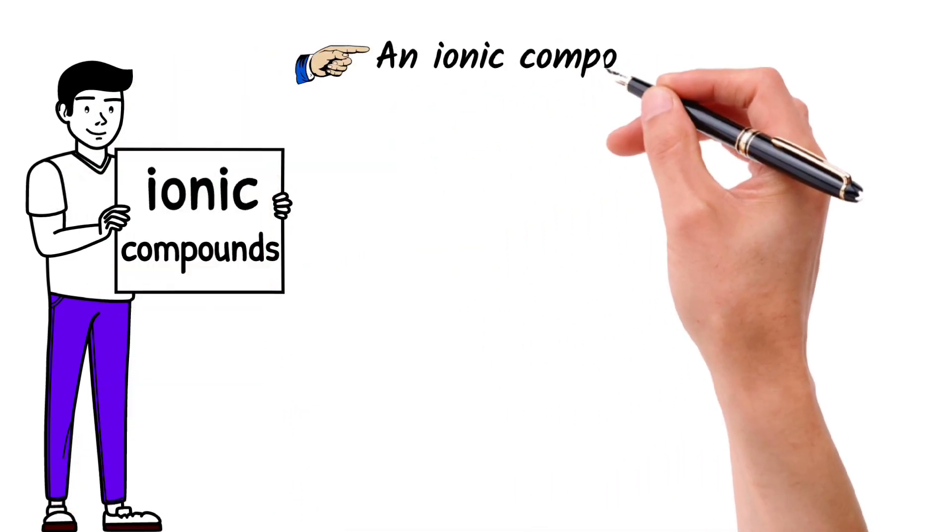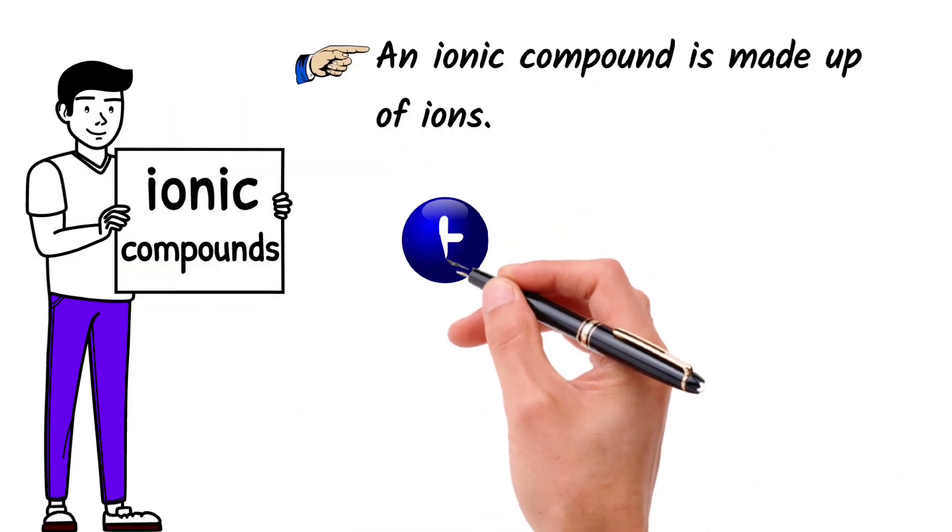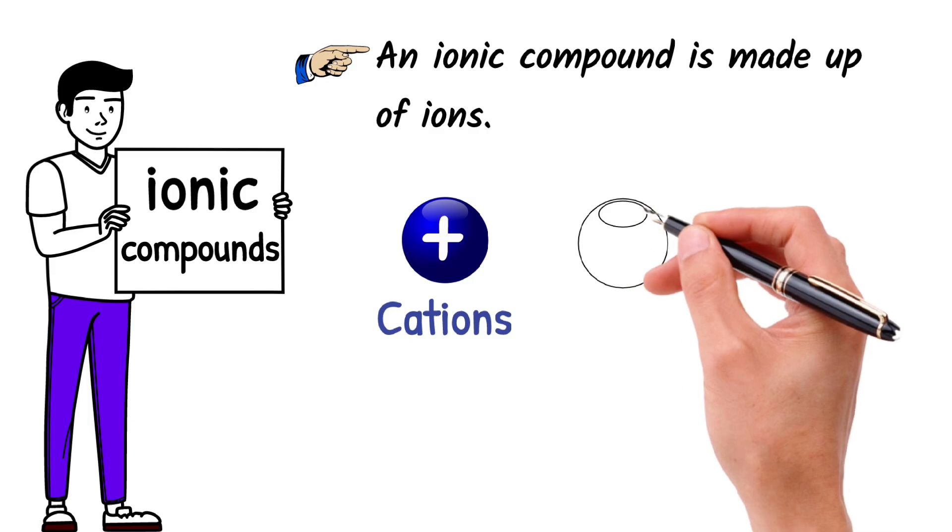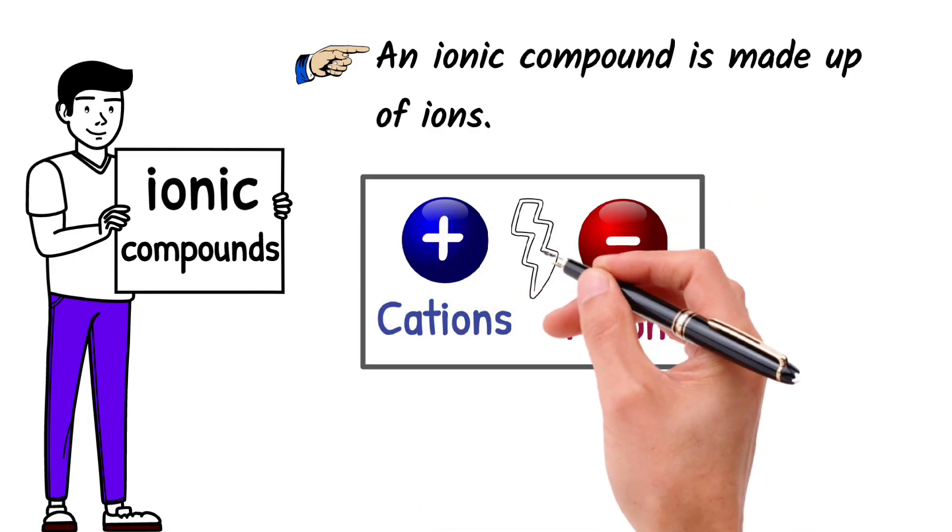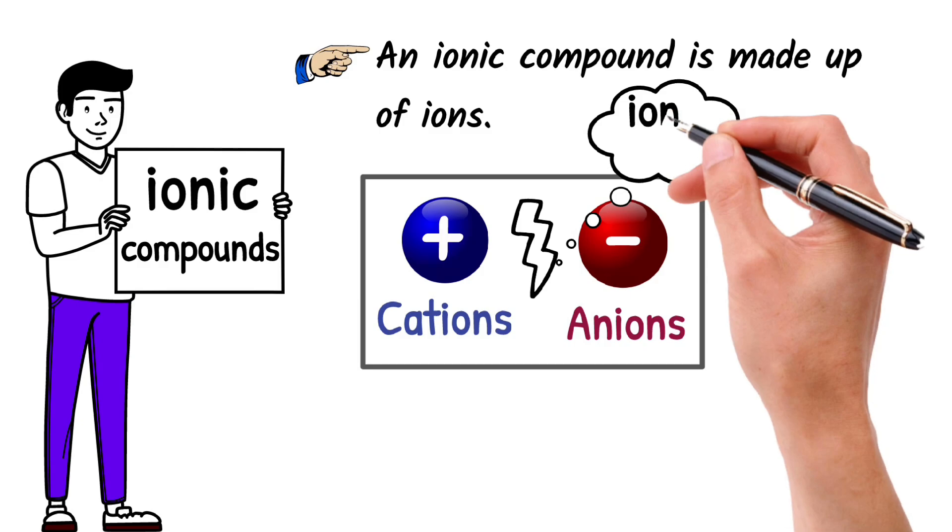An ionic compound is made up of ions, positively charged cations and negatively charged anions. These ions are held together by electrostatic forces, creating a strong bond known as ionic bond.